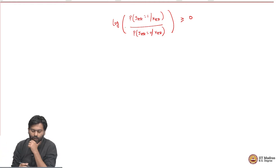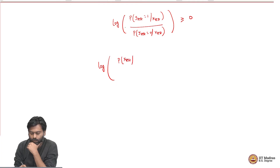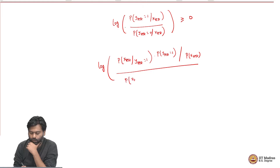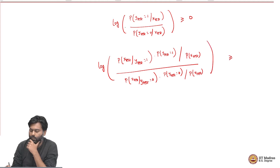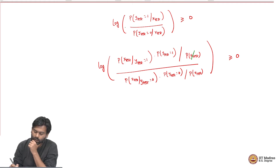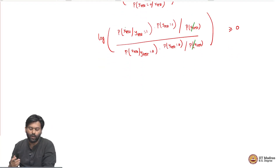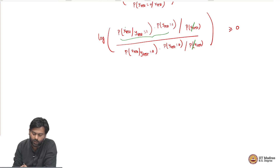Now let us flesh out the details. The probability of Y_test equals 1 by Bayes rule is P(X_test | Y_test=1) times P(Y_test=1) divided by P(X_test). This should be greater than or equal to 0 if we are predicting 1. The P(X_test) terms cancel out since they do not depend on the label — we only need to compare the numerator products.